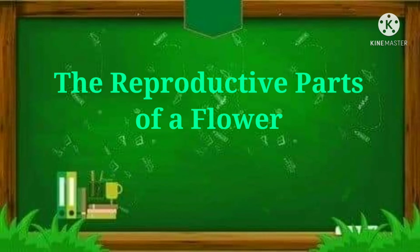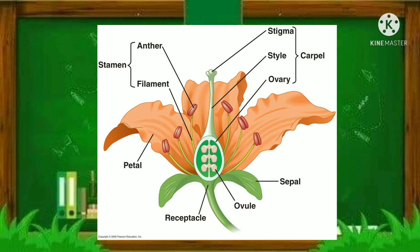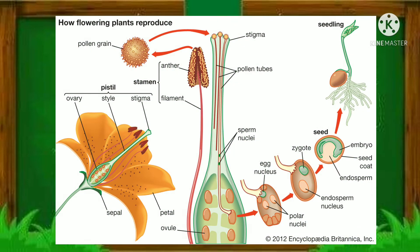The reproductive parts of a flower — the important parts of a flower, which are the reproductive structures, are the stamen and the pistil. The pistil is the female organ of the flower. It has three parts: the stigma, the style, and the ovary.